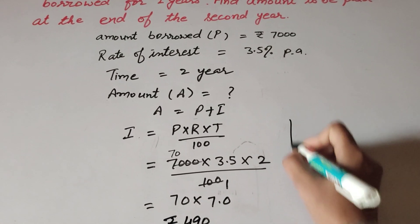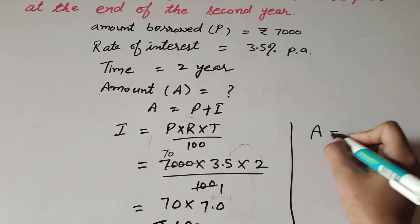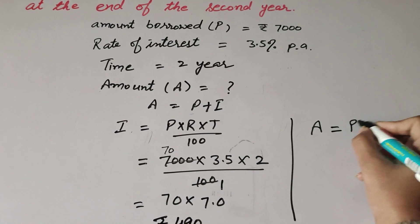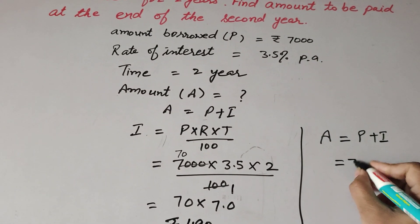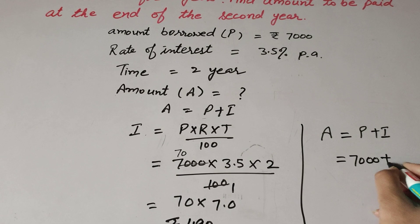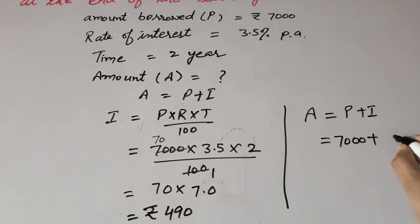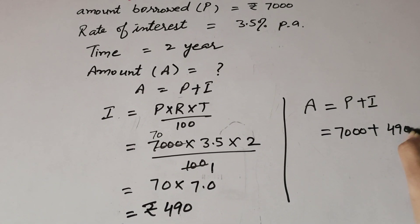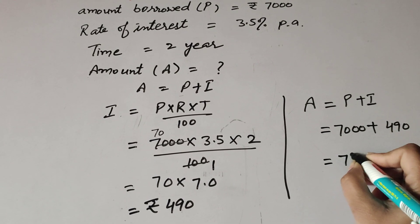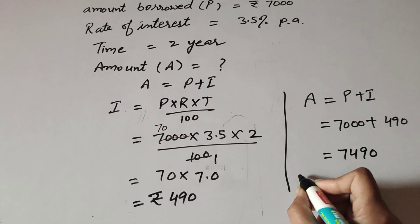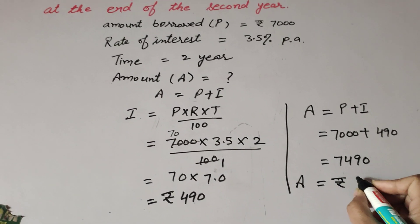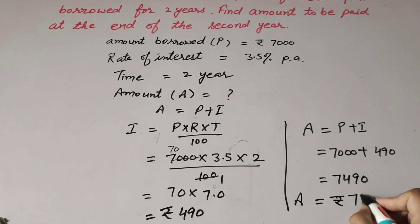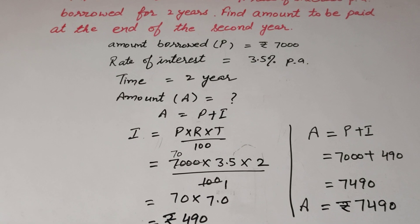Now we find the total amount. Amount = Principal + Interest = 7000 + 490 = 7490. So the total amount to be paid at the end of two years is ₹7490.